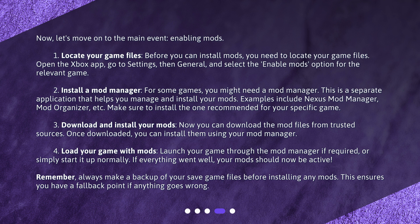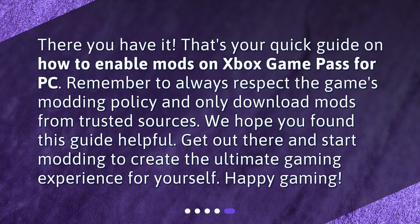Remember, always make a backup of your save game files before installing any mods. This ensures you have a fallback point if anything goes wrong. There you have it — that's your quick guide on how to enable mods on Xbox Game Pass for PC. Remember to always respect the game's modding policy and only download mods from trusted sources. We hope you found this guide helpful. Get out there and start modding to create the ultimate gaming experience for yourself. Happy Gaming!